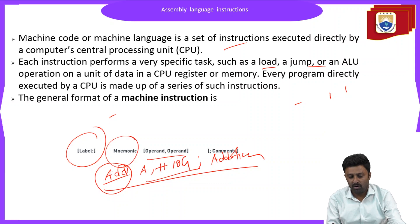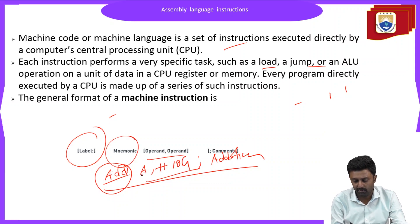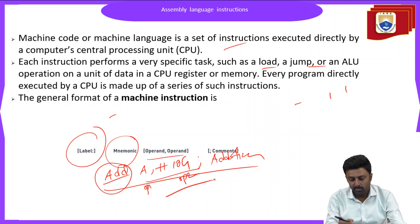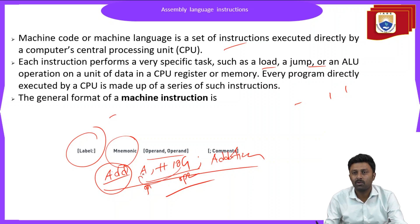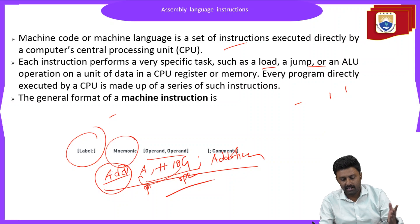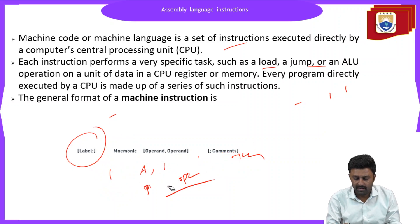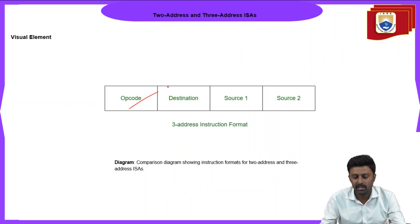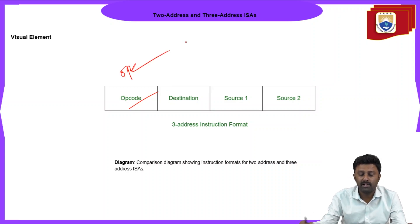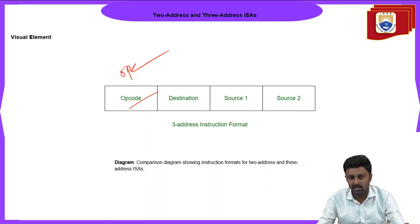In this example, the two things after the mnemonic are operand one and operand two. Based on the instruction, there may be more than two operands. The instruction will add the content of 10H and A, and the result will be stored in A. The general format of an instruction in assembly language basically consists of the mnemonic and the operands, where the mnemonic indicates the type of operation — addition, subtraction, multiplication, and so on.